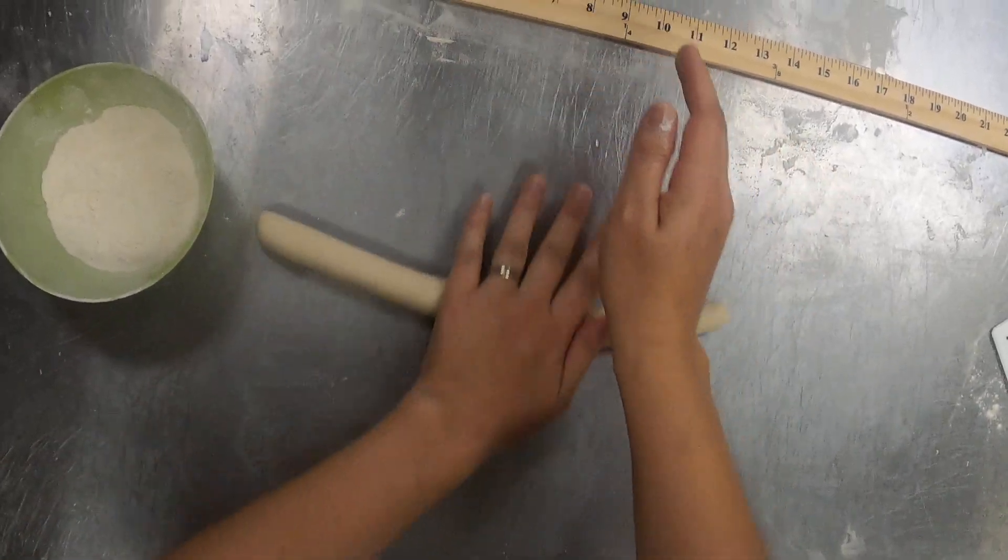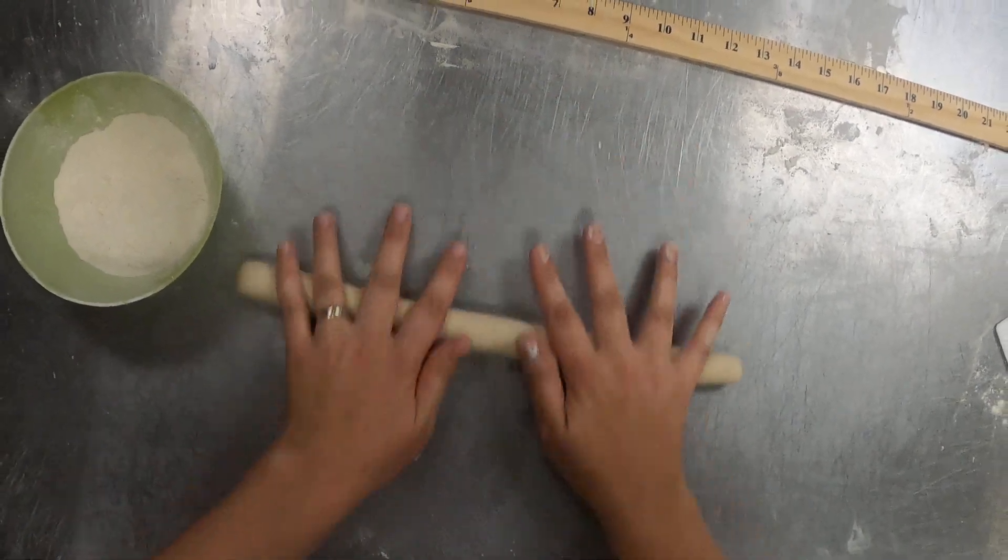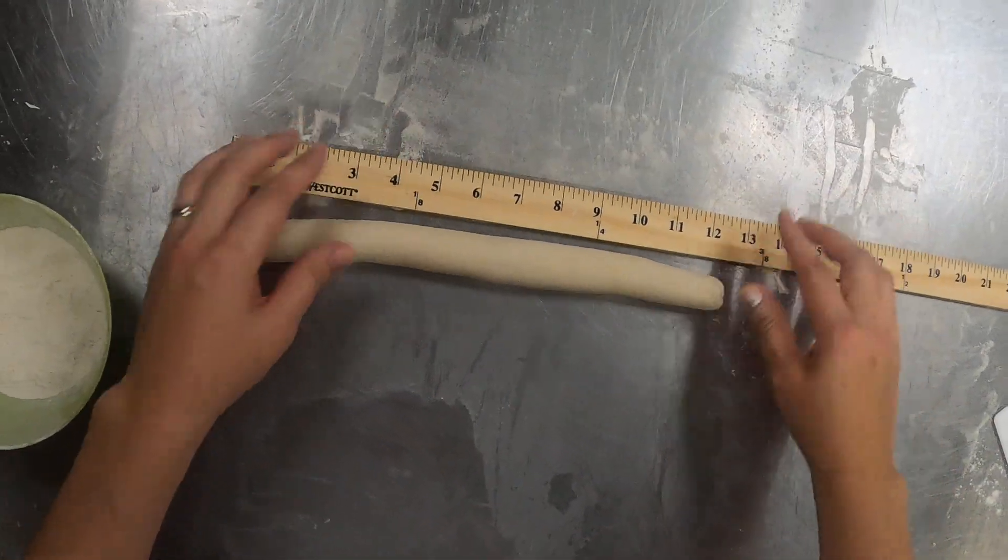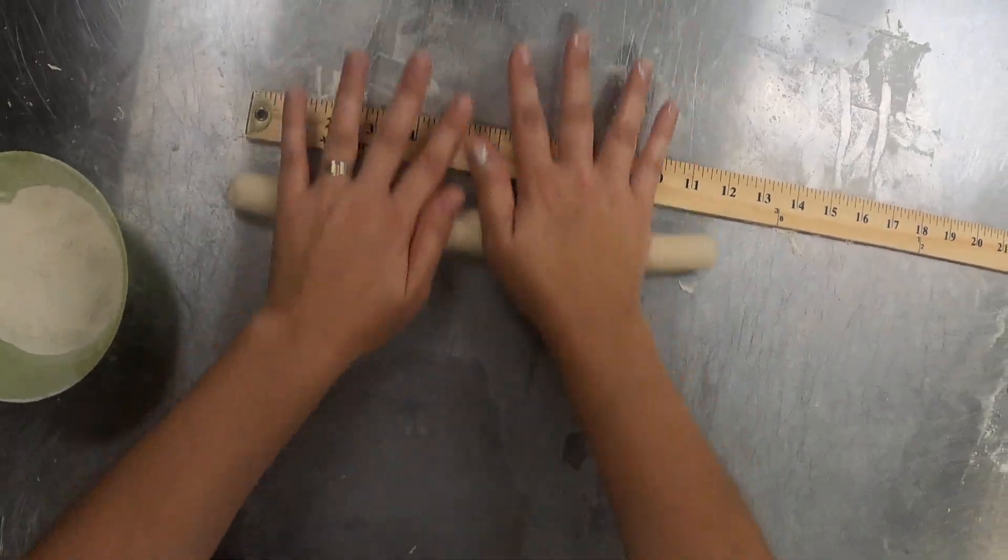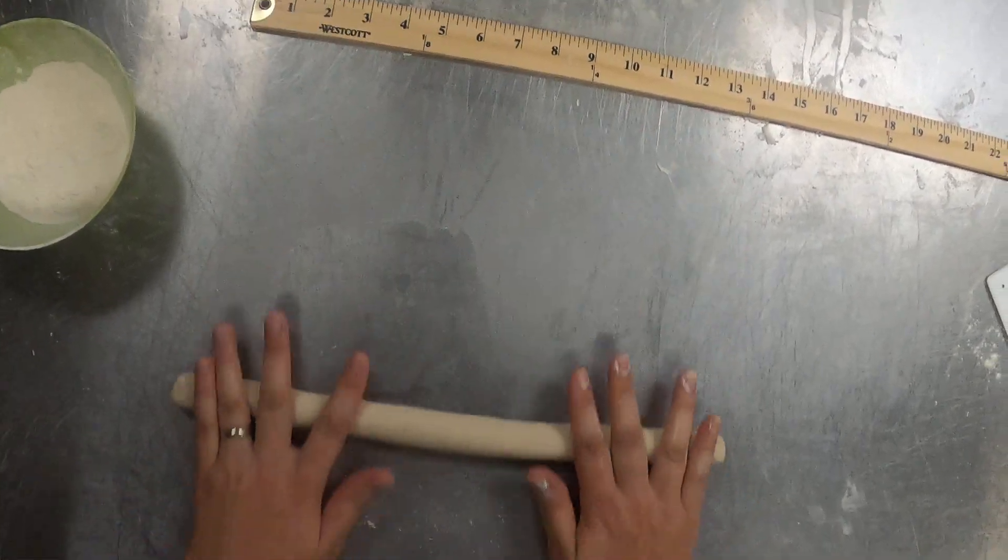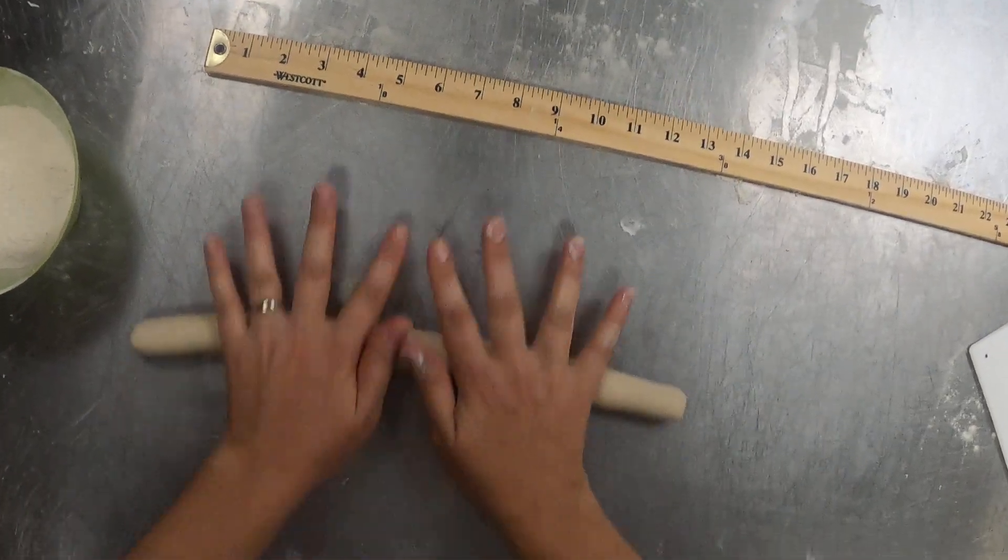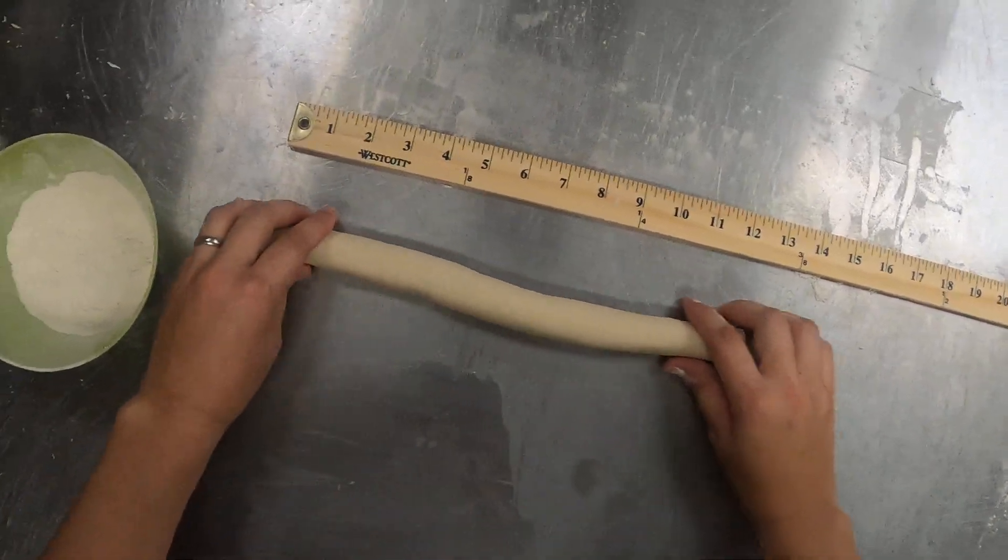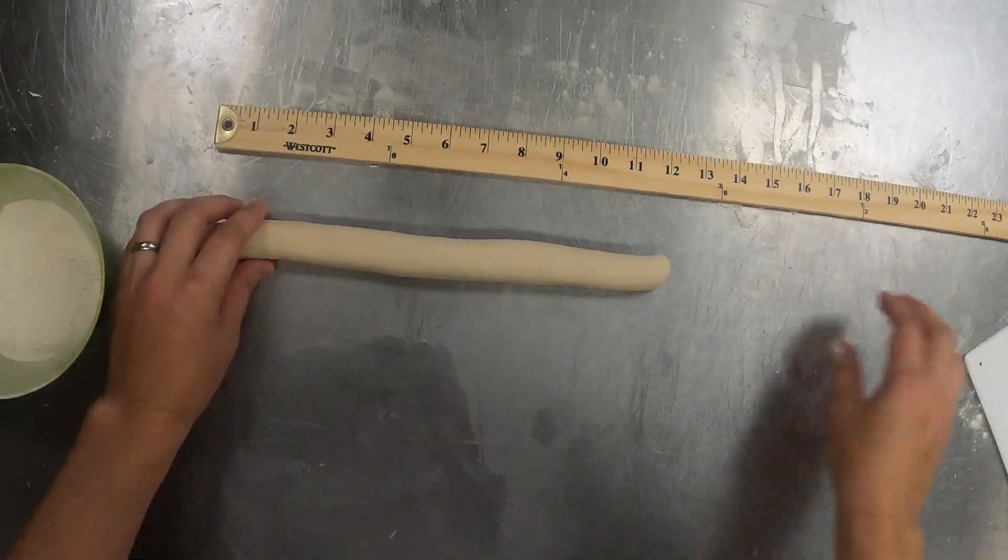It says to do about a half an inch pieces on this, and I think that that's not going to be enough to roll out. It wants you to get them pretty thin, which is fine, but I think we'll do it just maybe more like an inch.